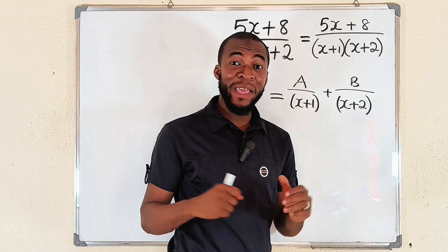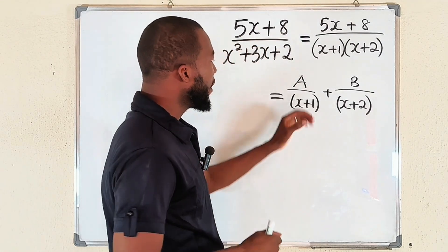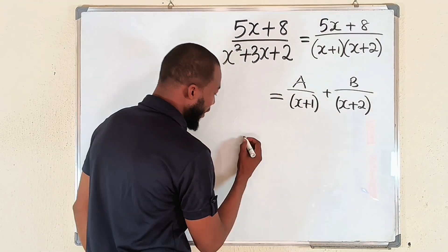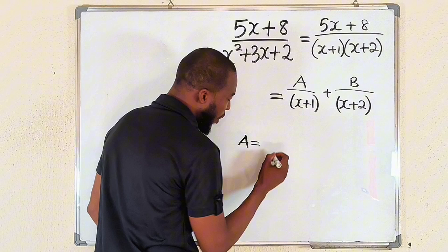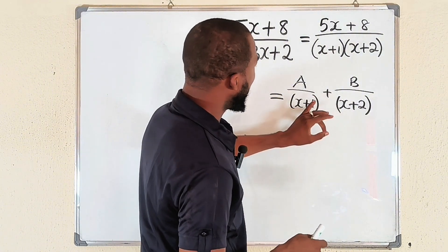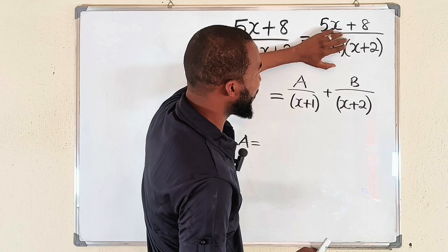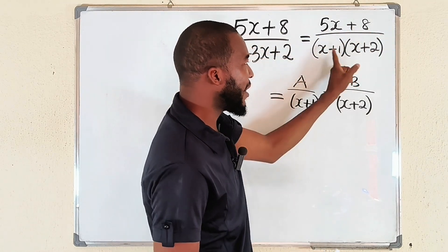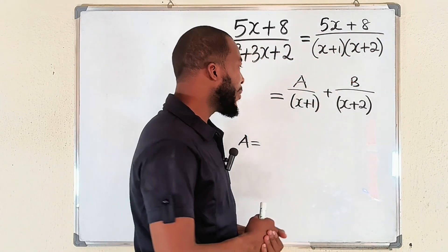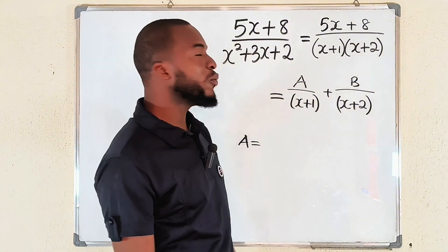Why do we call it cover-up? You cover this factor from here. You may cover this and consider this. You cover this and consider this. This is why we call it the cover-up method. Now to find the value of A: